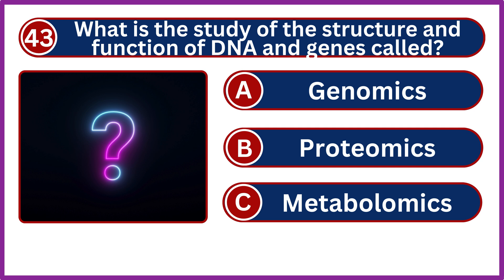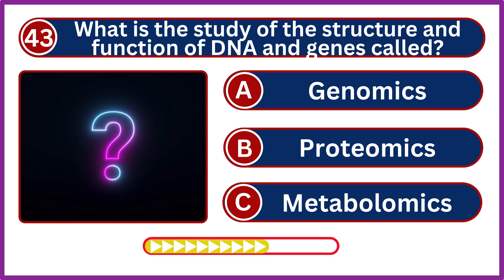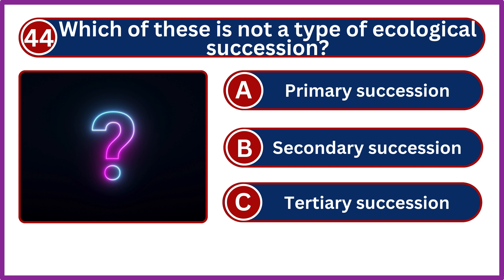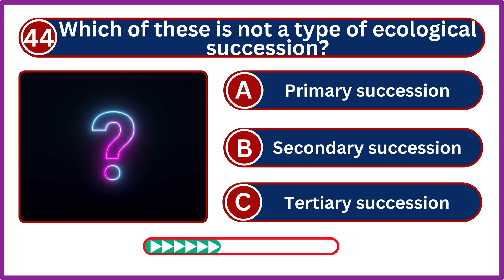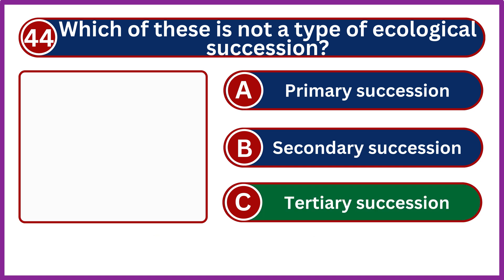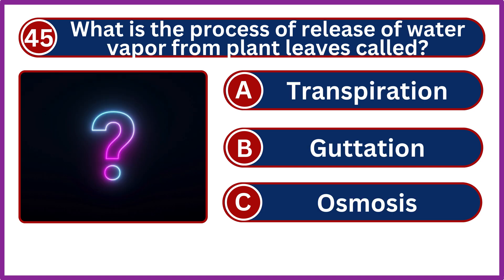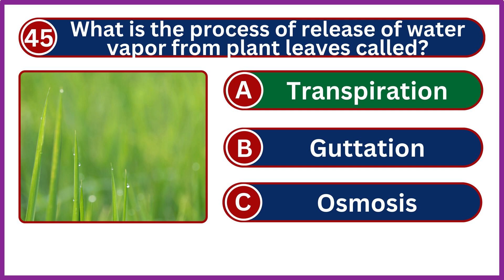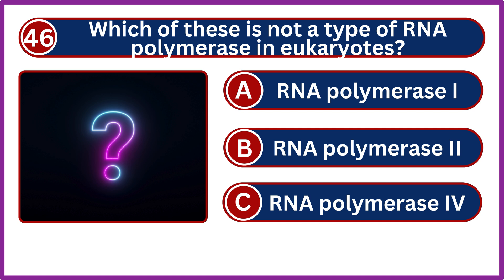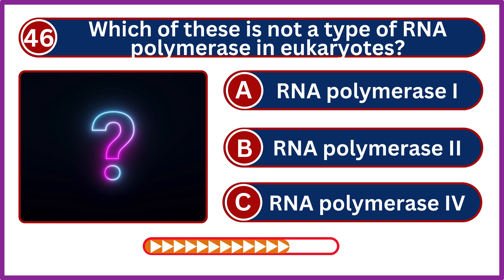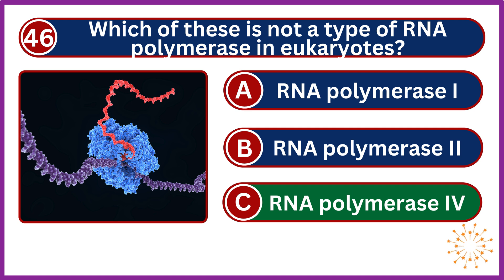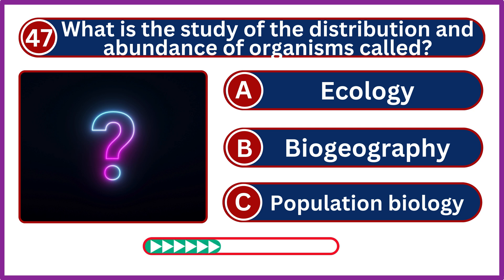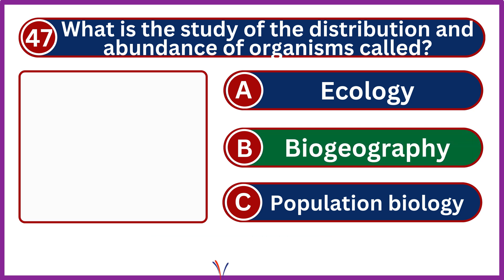What is the study of the structure and function of DNA and genes called? Genomics. Which of these is not a type of ecological succession? Tertiary succession. What is the process of release of water vapor from plant leaves called? Transpiration. Which of these is not a type of RNA polymerase in eukaryotes? RNA polymerase 4. What is the study of the distribution and abundance of organisms called? Biogeography.